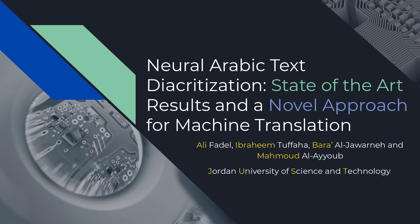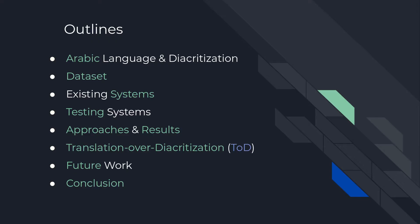Why do we need diacritization and how to use them in machine translation? The presentation will go as follows: first, we will talk about the Arabic language and diacritization, then mention the available datasets, list the existing systems, their approaches and results, explain our approaches and results, and present our novel approach — translation over diacritization for machine translation. Finally, we will discuss future work and conclude.